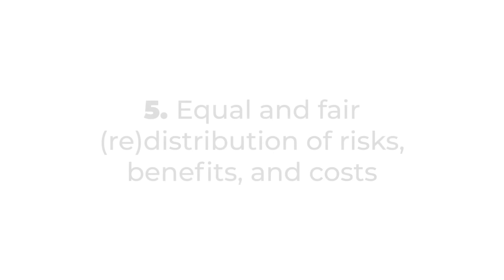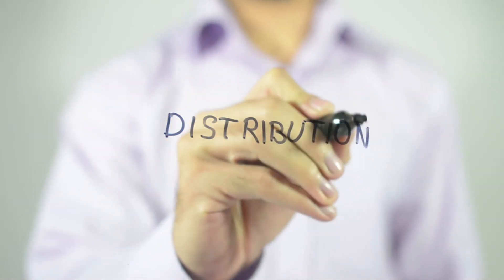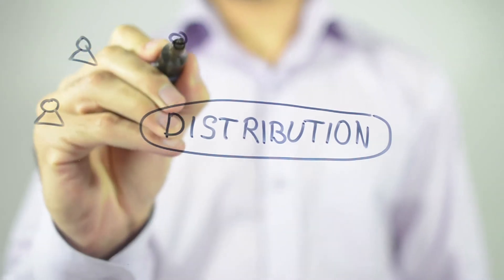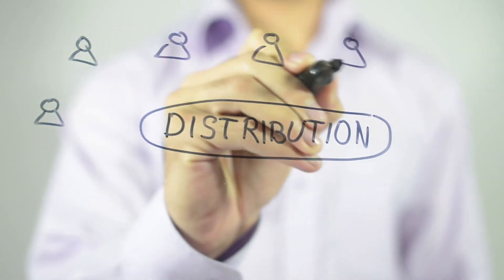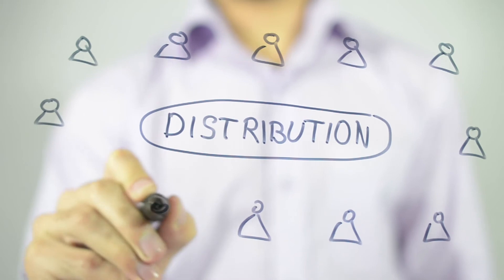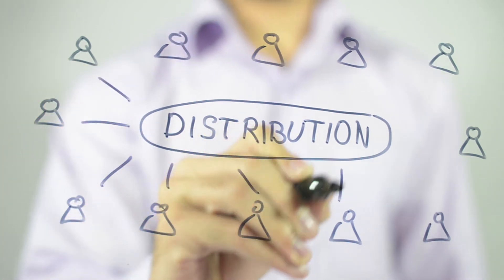5. Equal and fair distribution and redistribution of risks, benefits, and costs. This relates to the understanding of mechanisms of distribution of costs and benefits generated by the new water loops. It seeks to balance the distribution of costs and benefits.